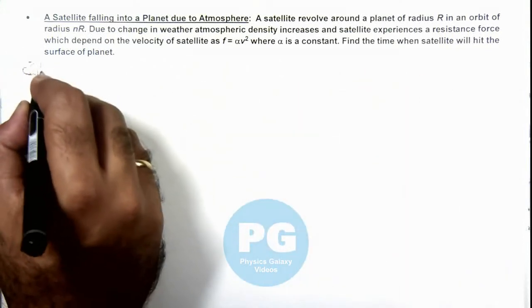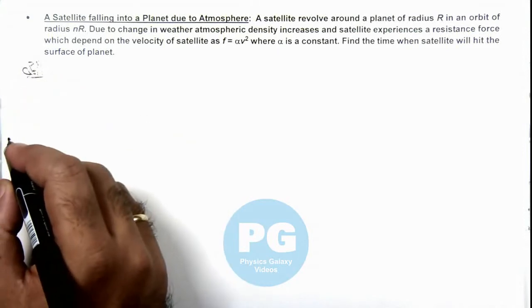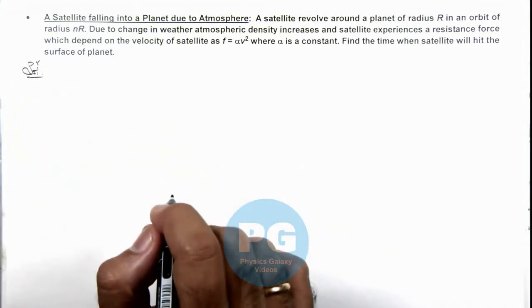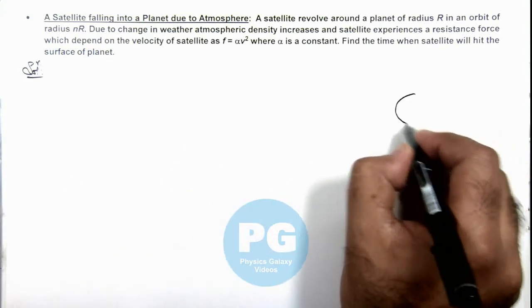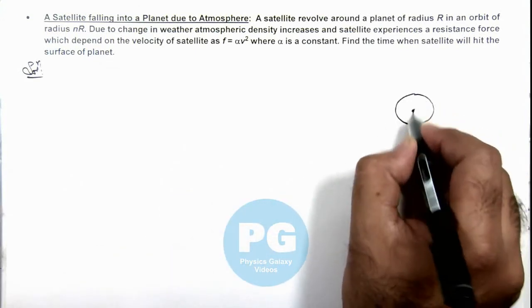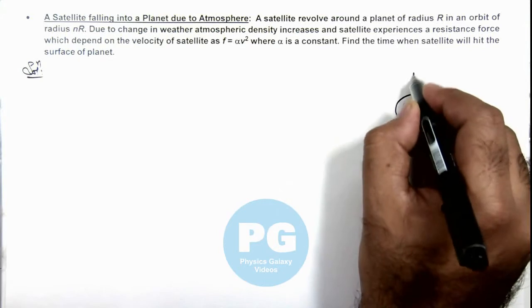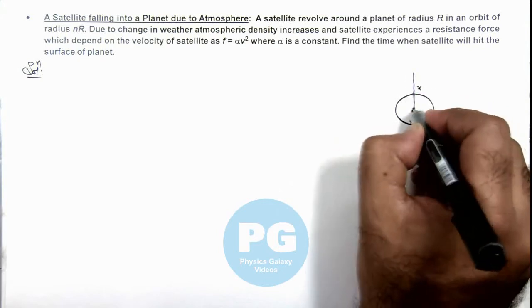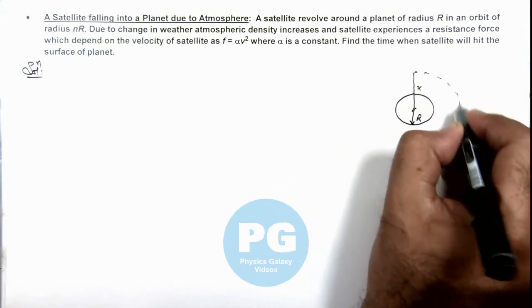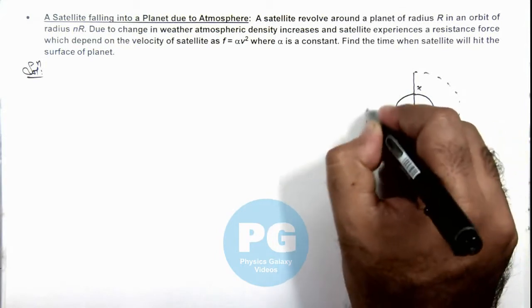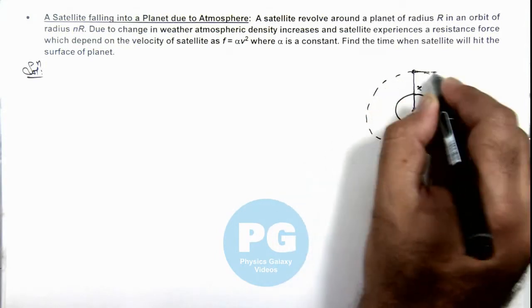Here in this situation we can see when satellite is revolving around the planet, like say if this is the planet of radius R, and say satellite is right now at orbit of radius x, then moving at a speed v.